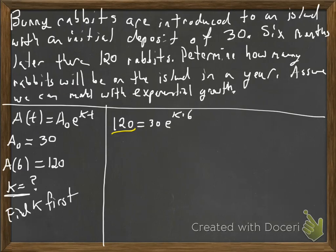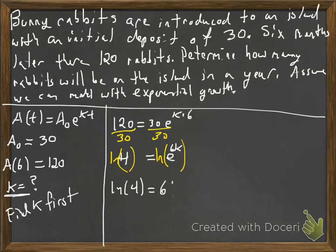So what we're going to do here is, just like when we solved for the interest rate, we're going to divide both sides by 30 to isolate the exponential. And then to undo the e to the 6k, to solve for that exponent, we're going to take the natural log of both sides. Natural log works nice with e. They're inverses of each other. So we have the ln of four is equal to 6k.